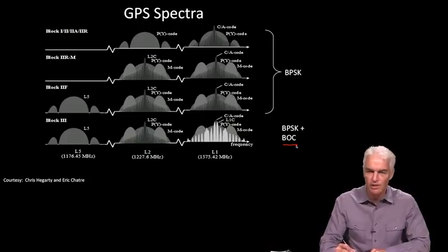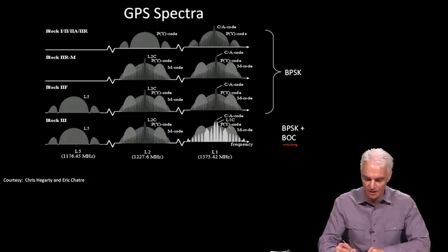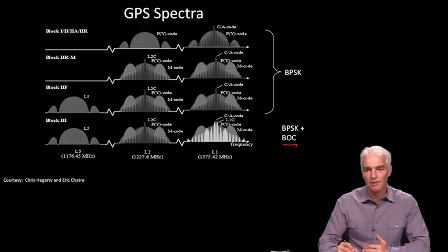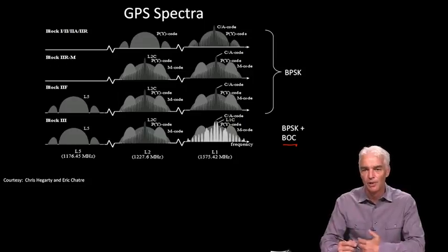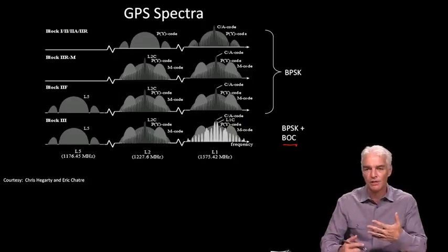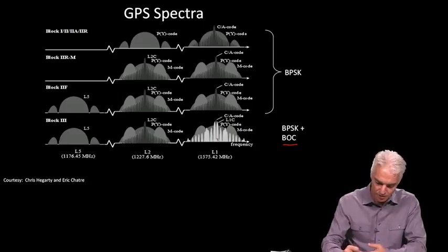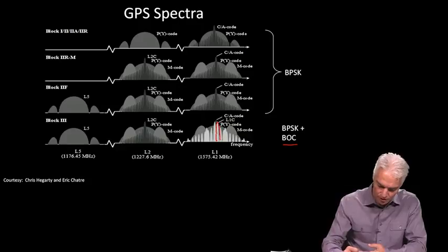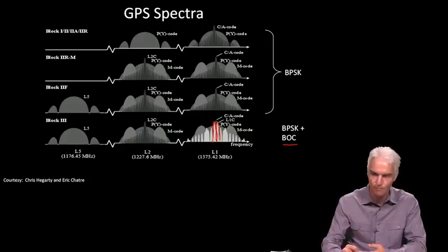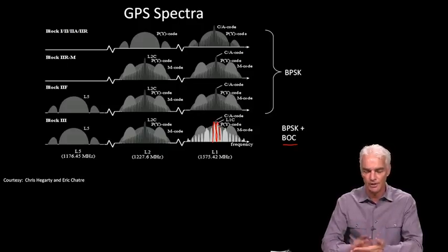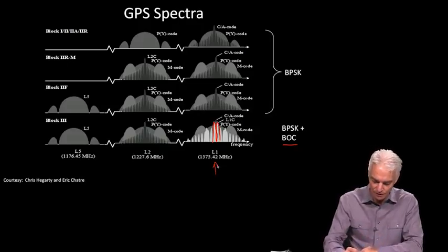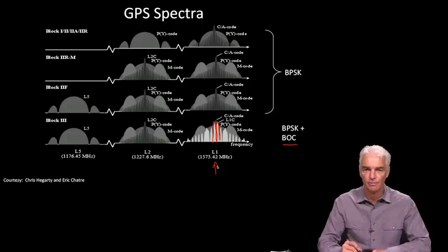And BOC stands for Binary Offset Carrier. And the best way to think about it is BPSK, you remember, was very simple. It was just a PRN code multiplying a carrier wave, so the phase changed every now and again. BOC is like one PRN code and another one on top of it. It makes a more complicated frequency spectrum, but it has a special characteristic that it's got two main lobes and nothing in the middle. And so you can have the CA code and the BOC code overlaid at the same center frequency without interfering with each other, and that's the special characteristic of the BOC code.